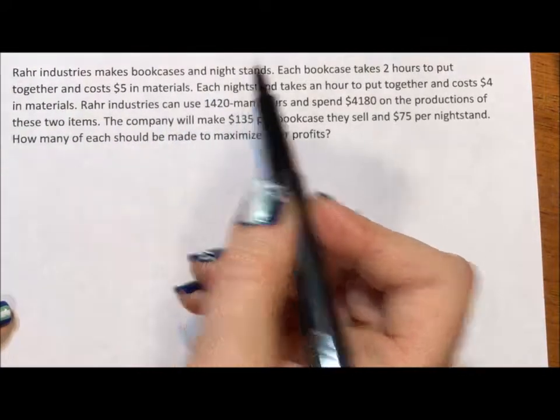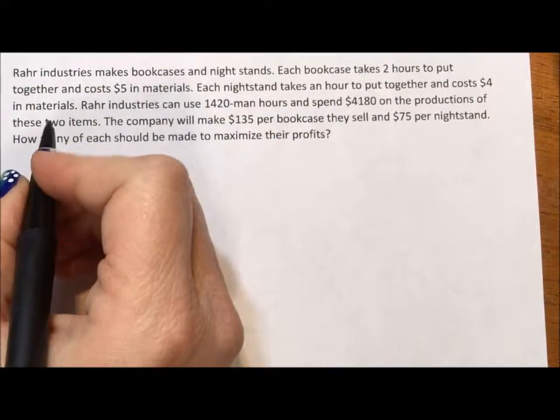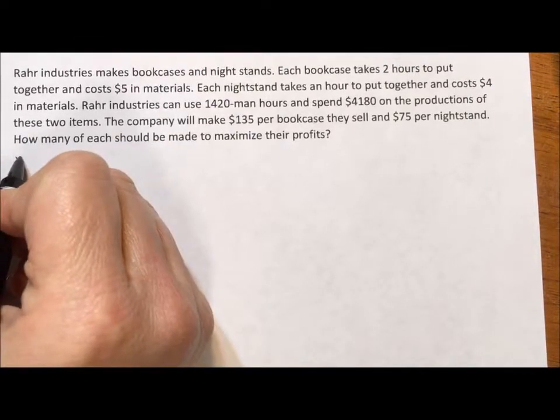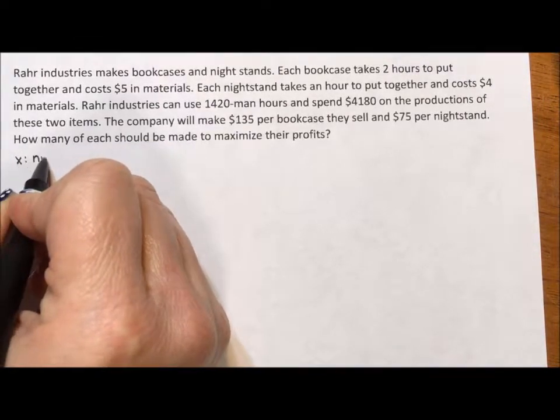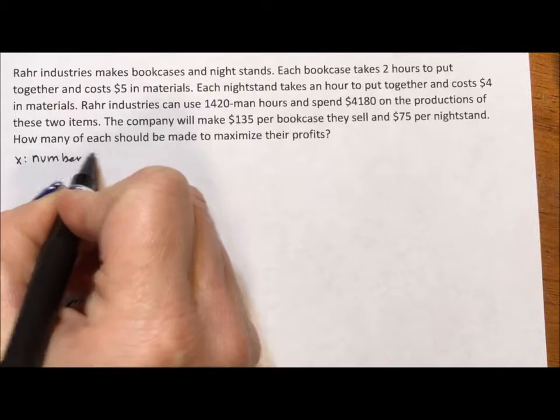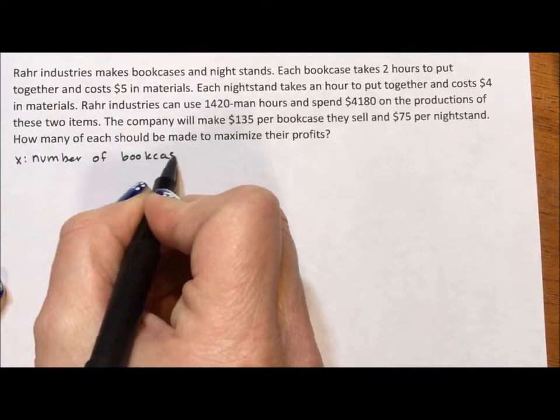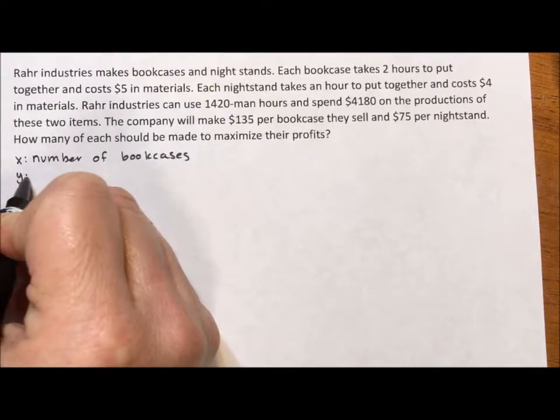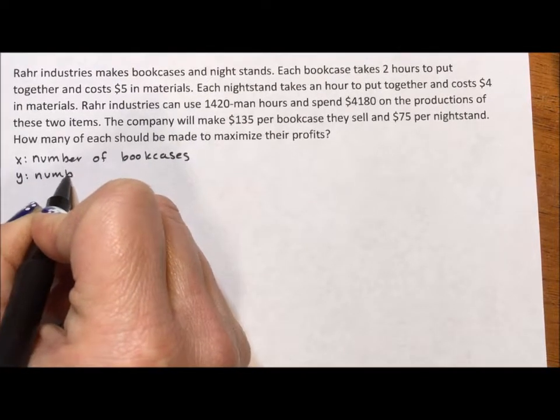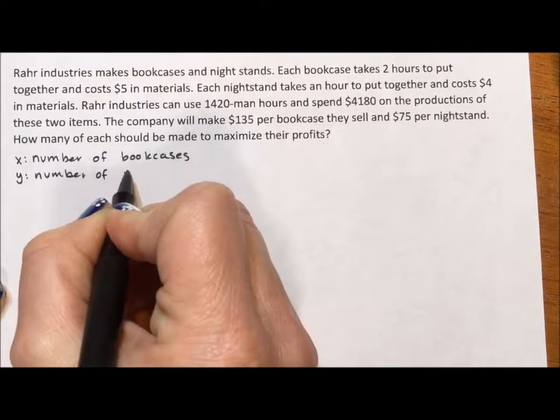So Raw Industries makes bookcases and nightstands. What I'm going to do is start off by saying that x is the number of bookcases, and y is the number of nightstands.